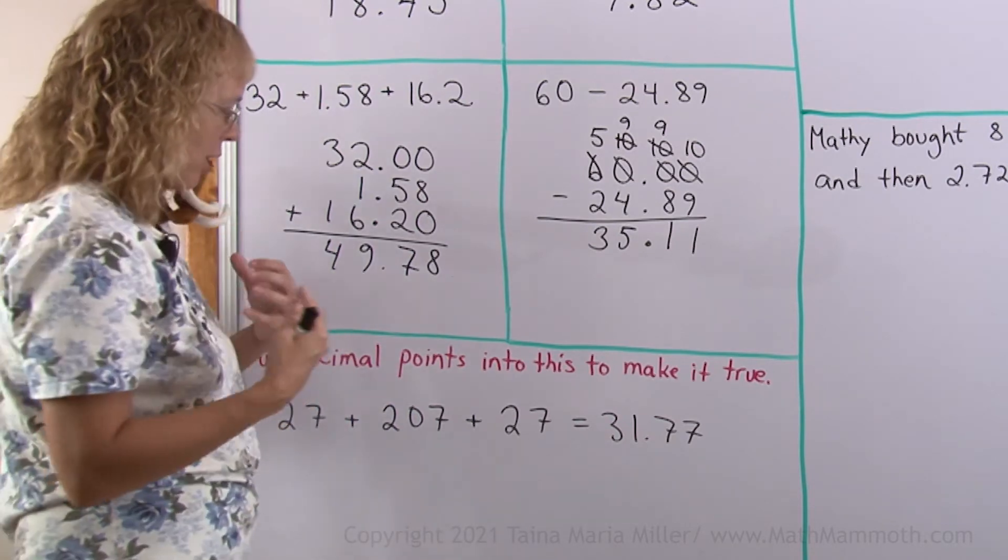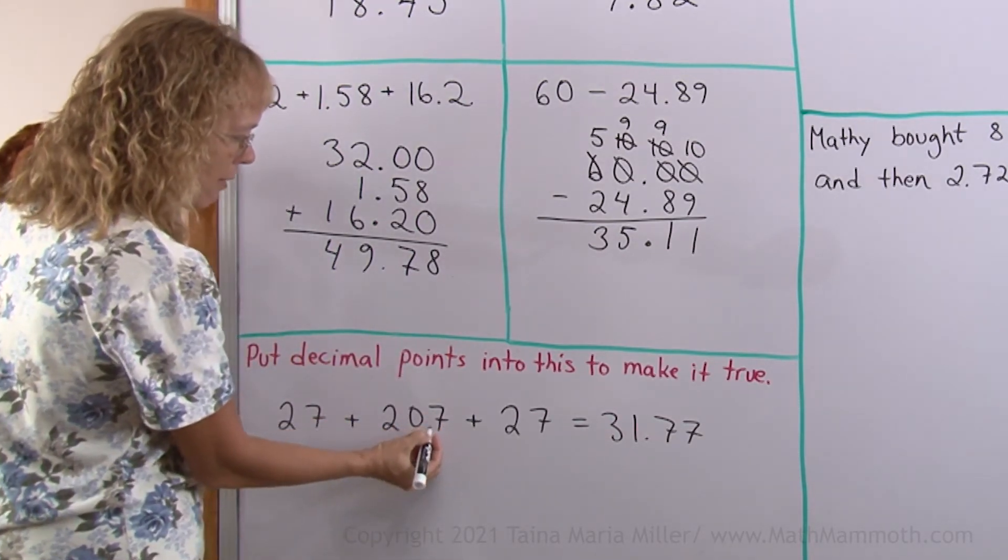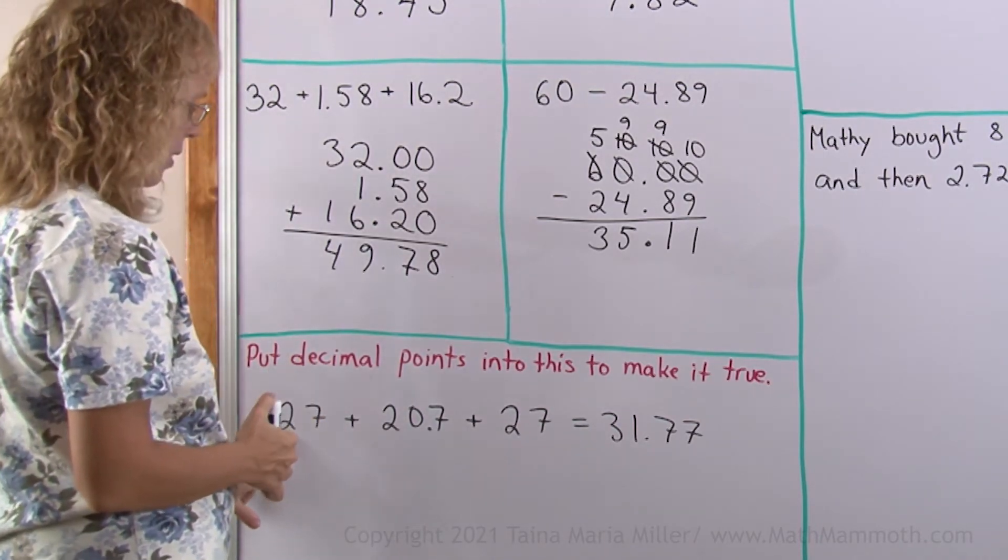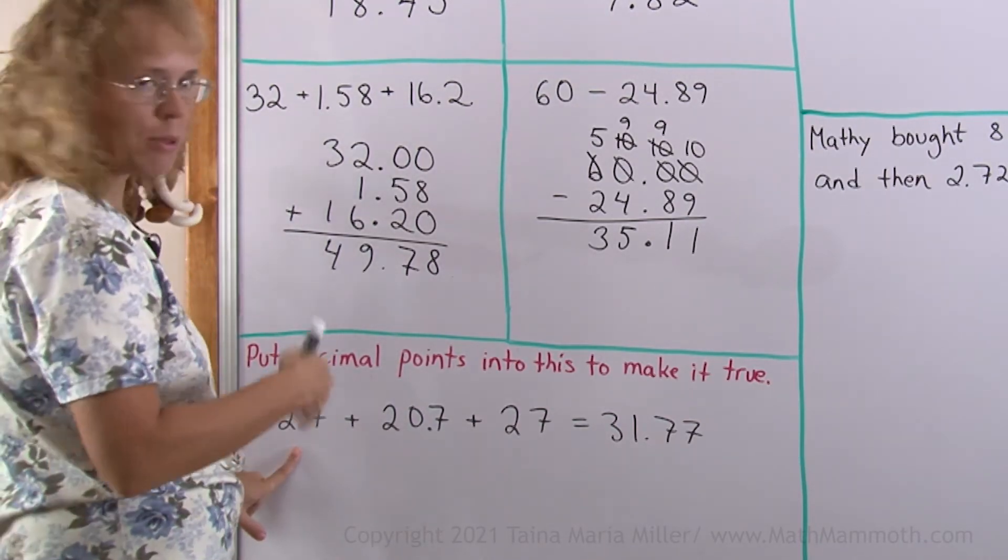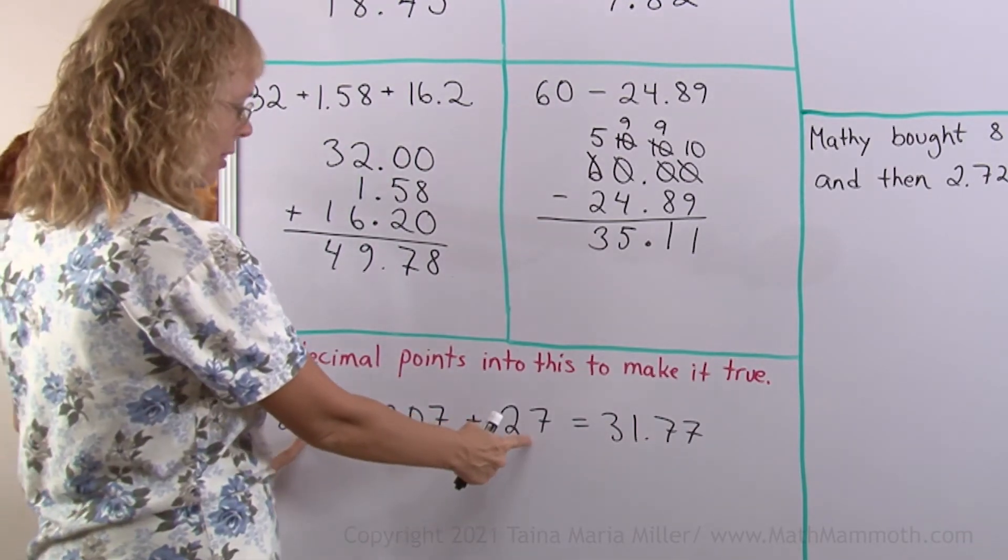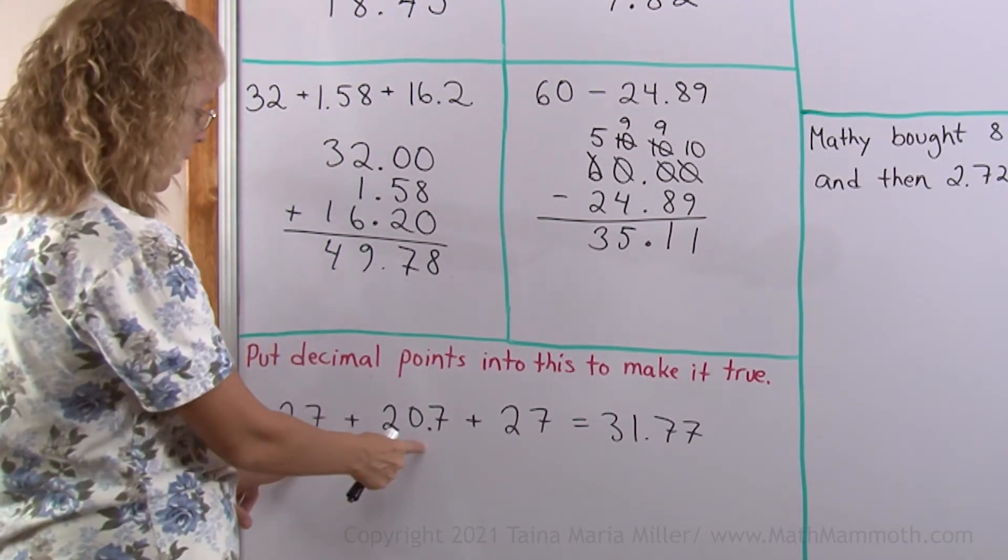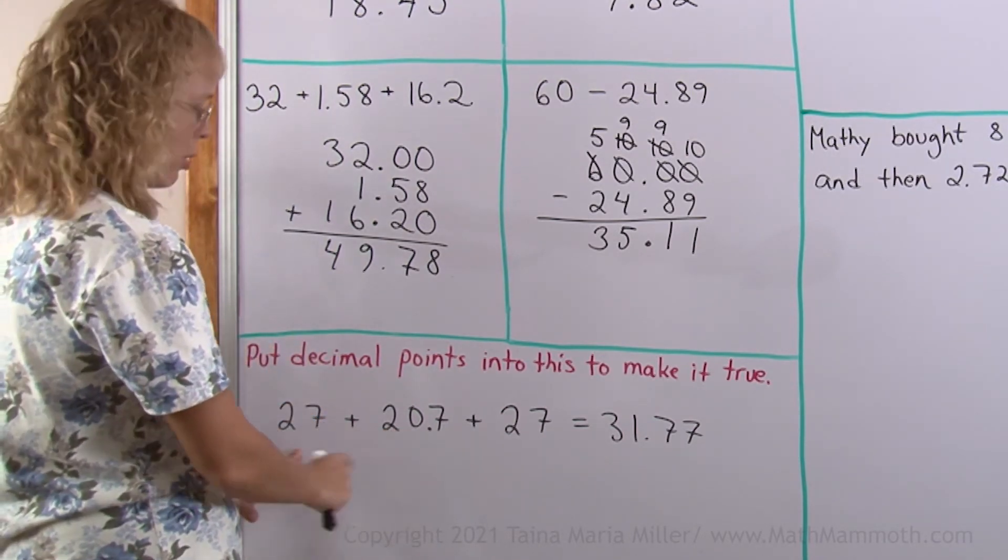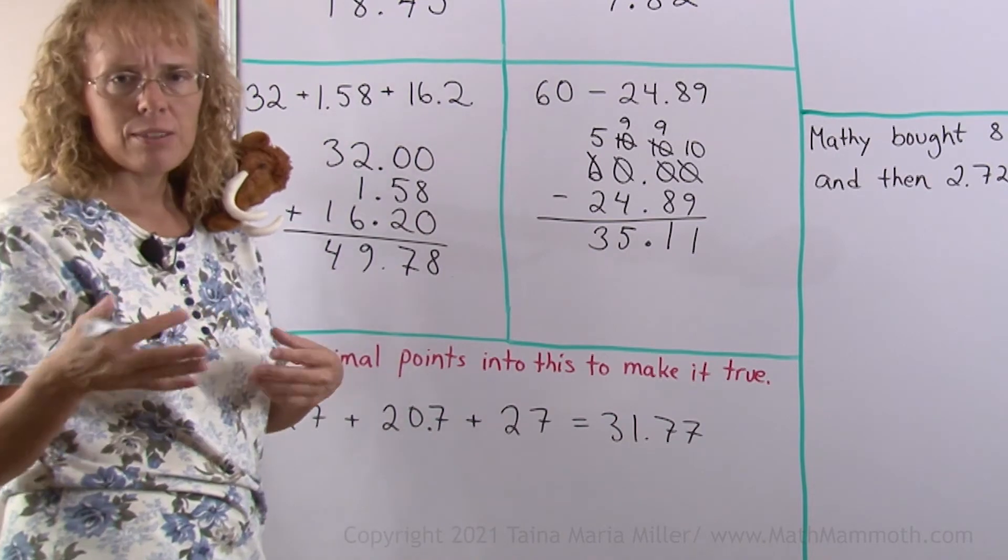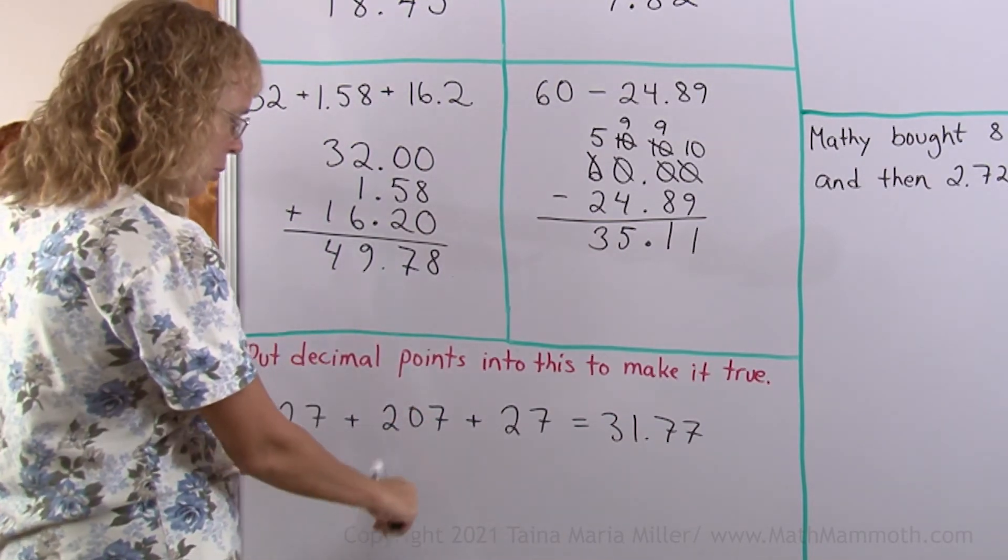Let me check first if it could be twenty point seven. If this is twenty point seven, then this cannot be twenty-seven. It would be too much. This cannot be twenty-seven either. So this could be two point sevens. But that's not going to be enough. Twenty point seven and then two point seven, two point seven would be just twenty-five, twenty-six something. That's not going to be enough. So this won't work.